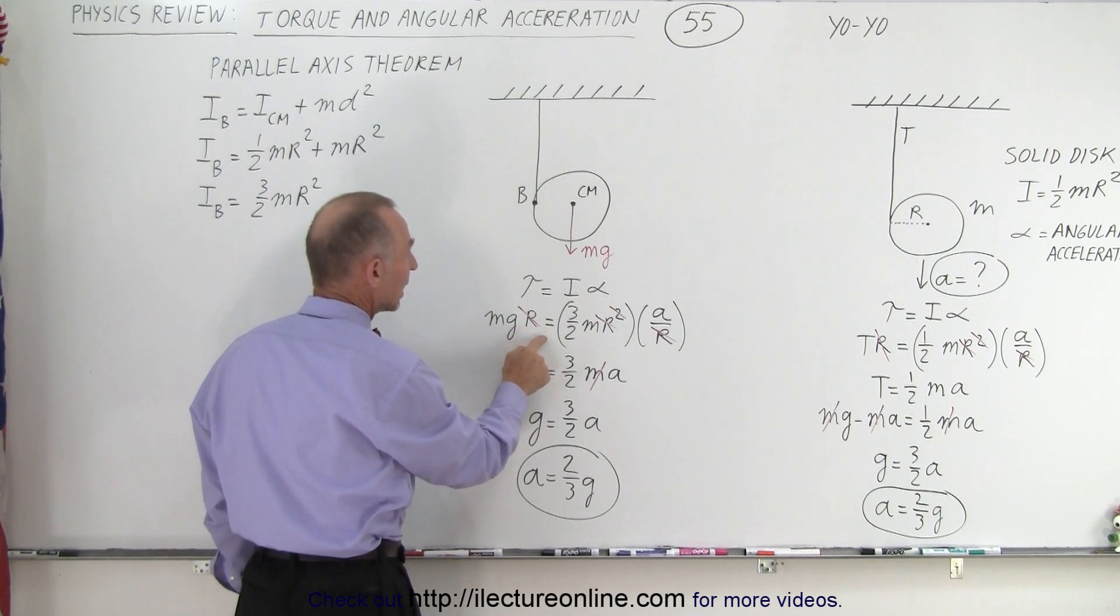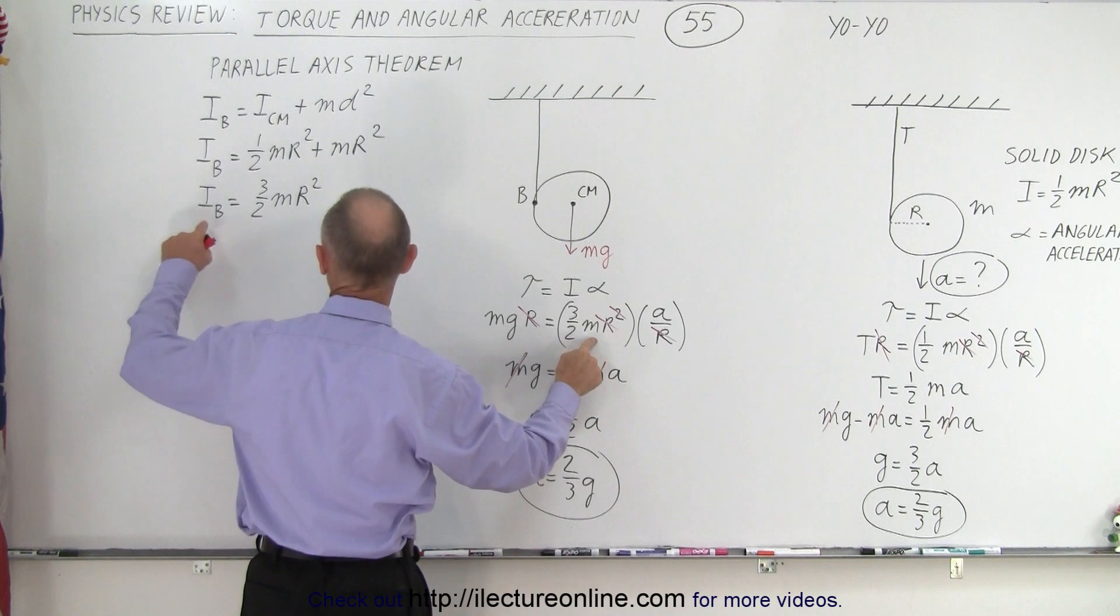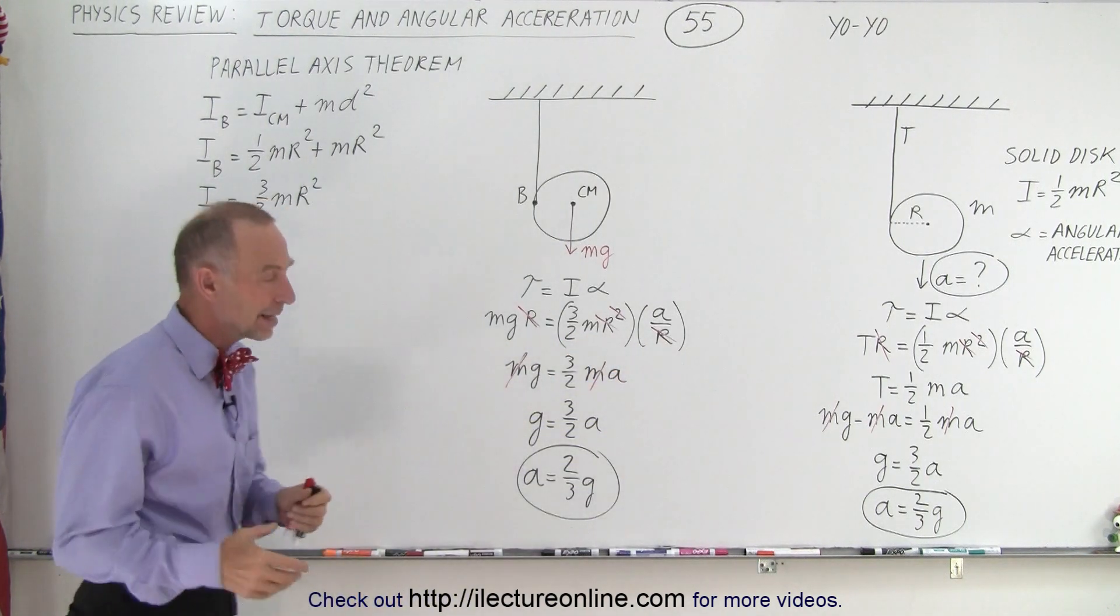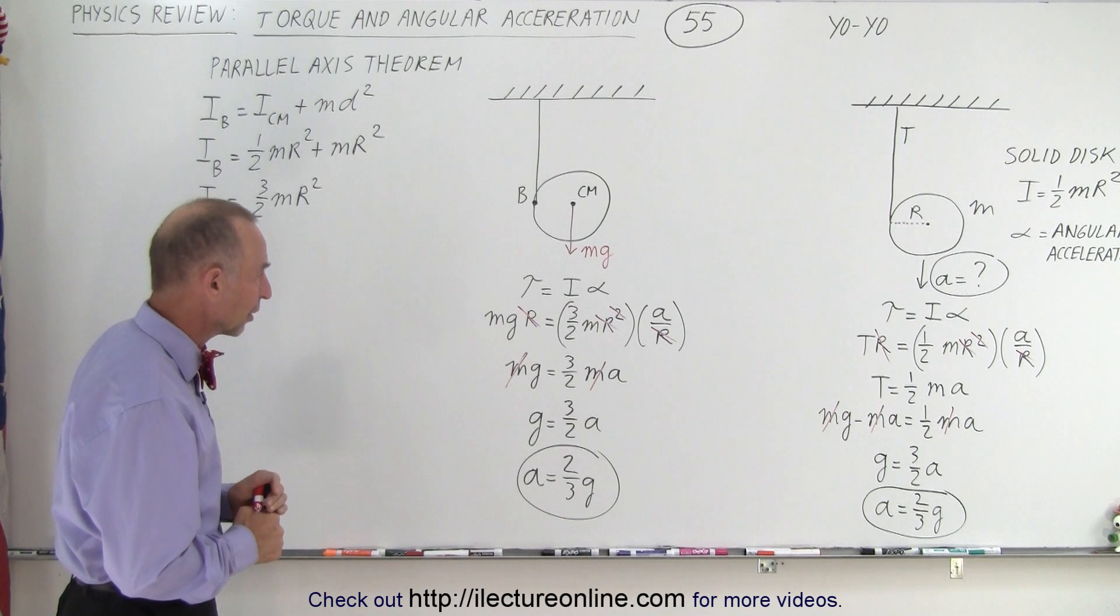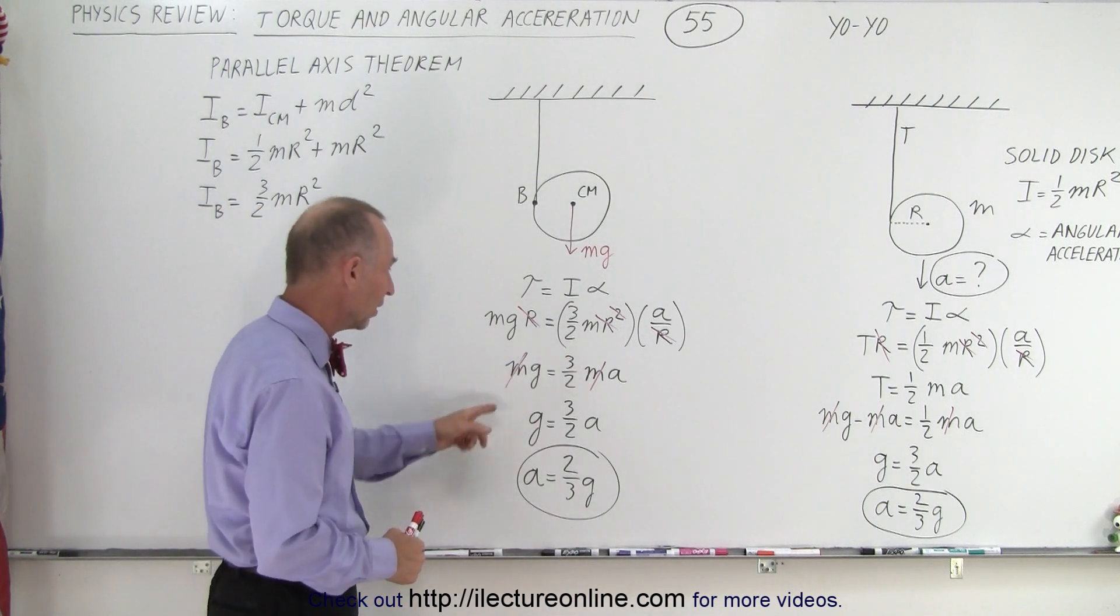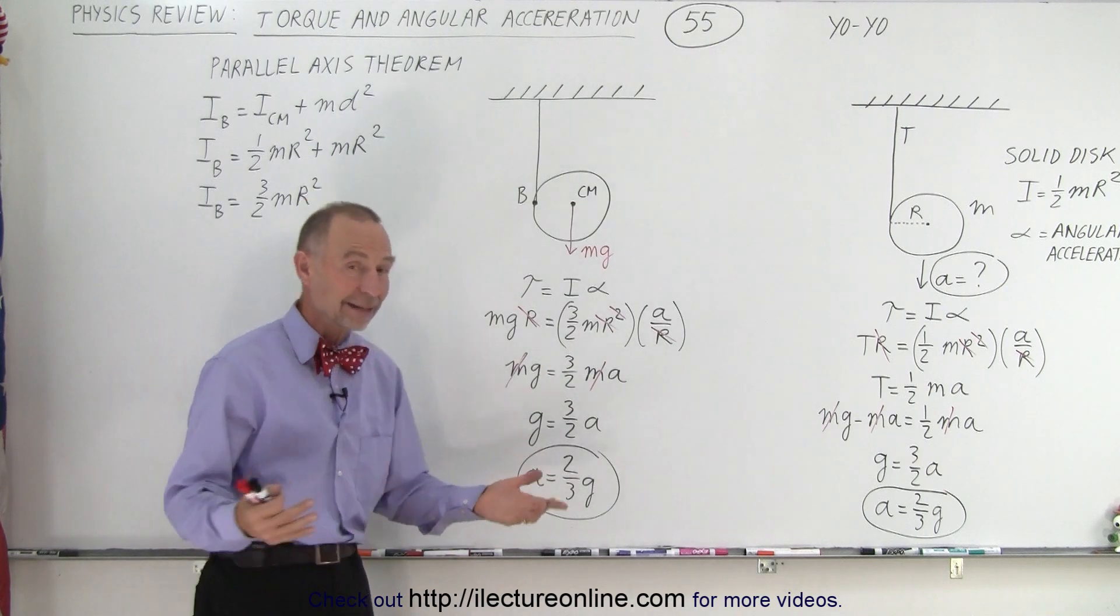That gives you the torque equals the moment of inertia, which is now the moment of inertia at point b, times a over r. Again, it's the equivalent of the angular acceleration. The r cancels, the m cancels just as before, and when we solve for a, we get the exact same result.